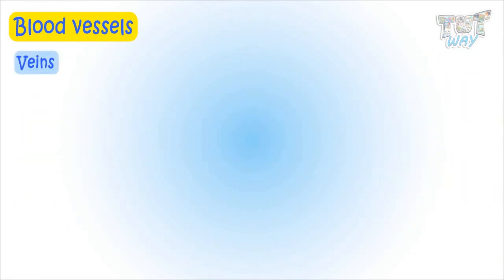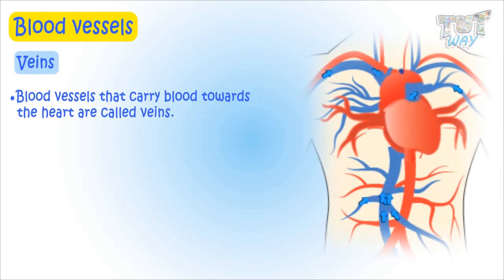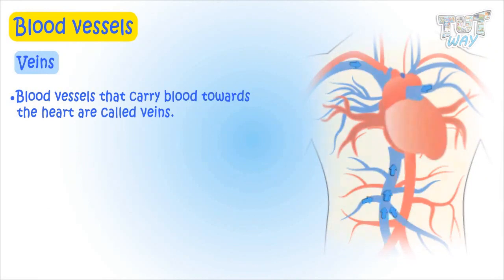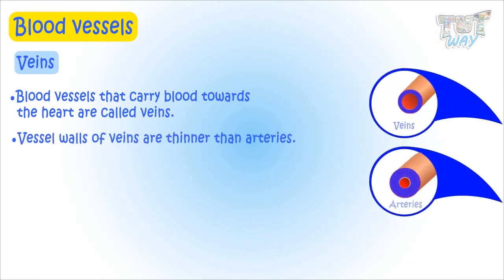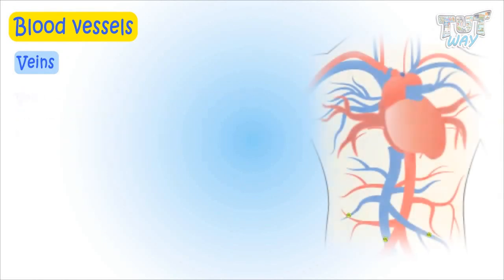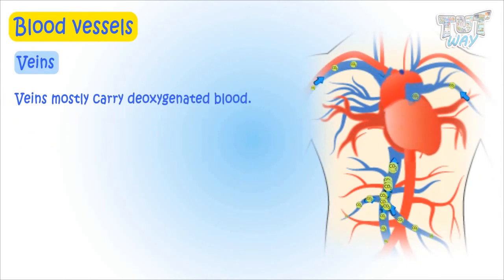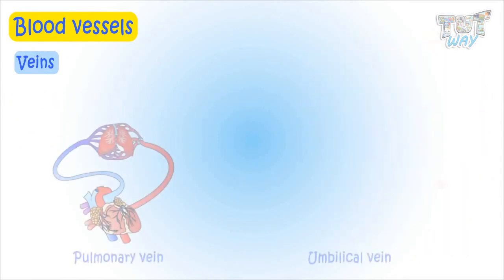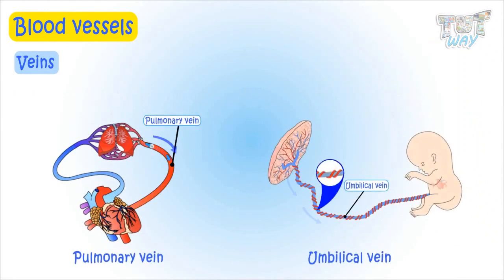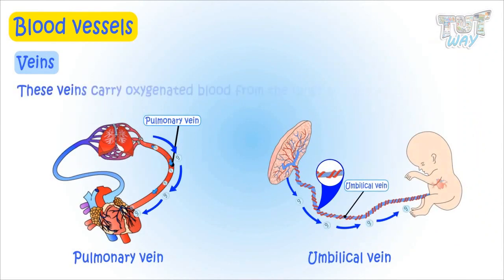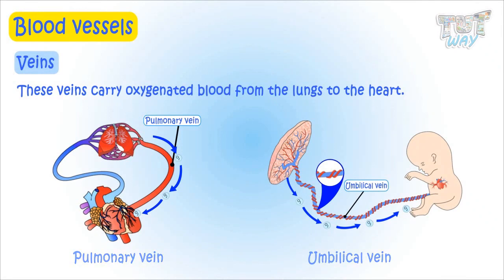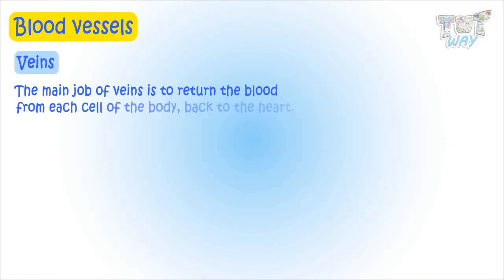Blood vessels that carry blood towards the heart are called veins. Vein walls are thinner than arteries. Veins mostly carry deoxygenated blood, with two exceptions: pulmonary and umbilical veins, as these two veins carry oxygenated blood from the lungs to the heart.